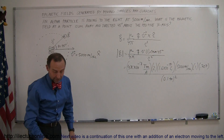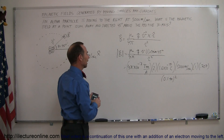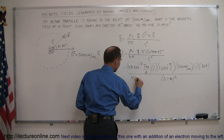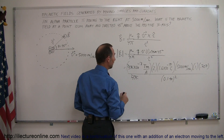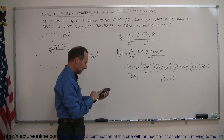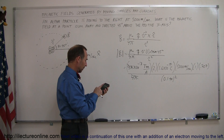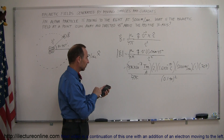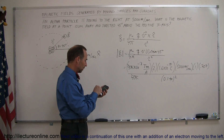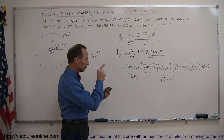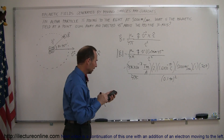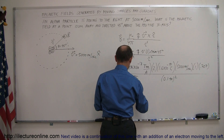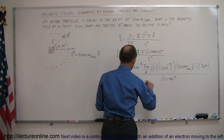Now let's find the value of that with a calculator. The 4 pi in the numerator cancels out the 4 pi in mu-naught. Working out the rest: 10 to the minus 7, times 2 times 1.6 times 10 to the minus 19, times 5,000, divided by 0.1 squared, times 0.707 — sine of 45 degrees — gives us 1.13 times 10 to the minus 20 Teslas.